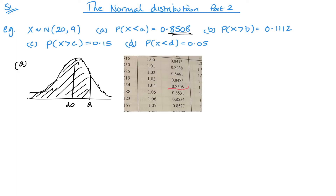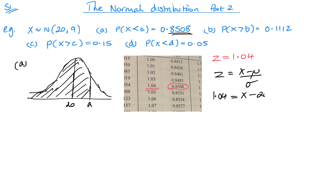Looking up 0.8508 in the tables, we get z = 1.04. Now using the formula z = (x − mean) / standard deviation: 1.04 = (x − 20) / 3. So multiply by 3 and add 20, giving x = 23.12.